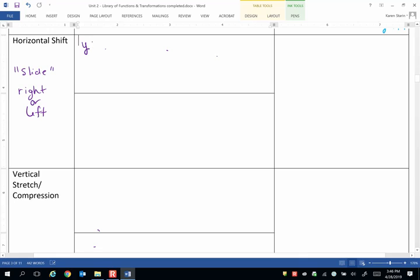Well, we have y equals f, but we're going to take the x value and we're going to either say minus a value c, or we're going to take the x value and on the inside of the grouping symbol of the function notation, it's going to look like x plus c.